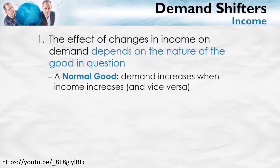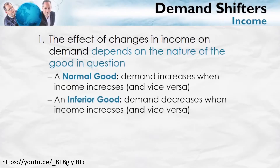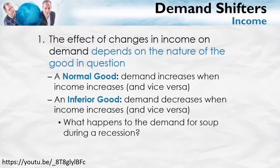There are also goods for which, when your income goes up, your demand for them actually goes down. When I was a poor student, I sometimes went to McDonald's for a cheeseburger because it was cheap. When my income went up, I ate at McDonald's less often and ate at better restaurants. An inferior good is one where, when your income goes up, demand goes down. For instance, soup is a cheap and easy meal — during a recession, demand for soup may go up, but during boom times, demand for soup may go down.